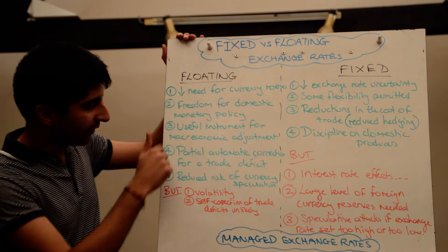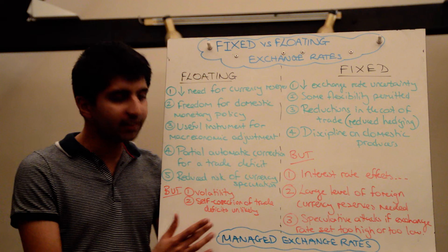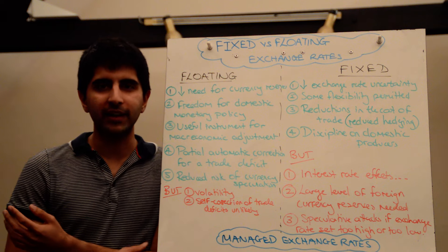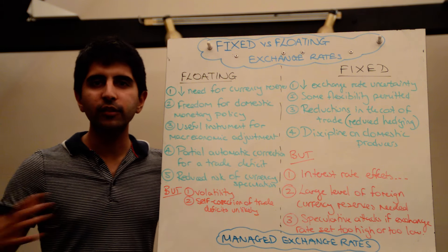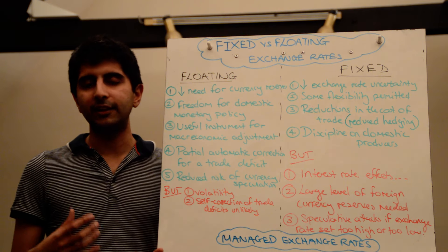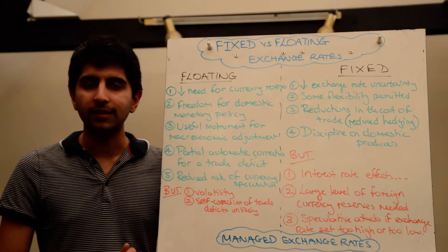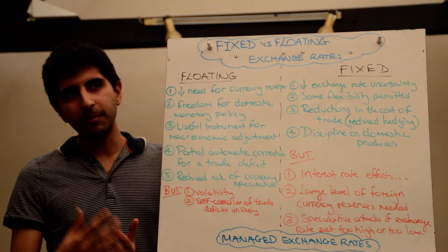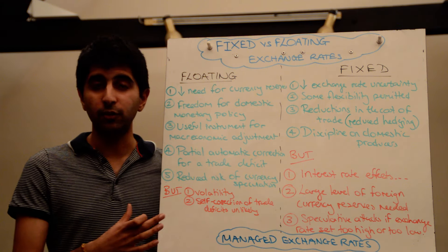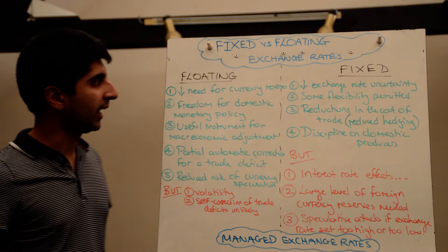Also, when we talk about the self-correction of a current account deficit, that's mainly theoretical — in reality it's unlikely to occur. Why? Because imports and exports are only two of the factors affecting demand and supply for a currency. There are loads of other far more dominant factors, like speculation. Speculative flows are way more likely to affect demand and supply and change the exchange rate value than a current account deficit is. So while import and export demand can have an impact, it's nowhere near as big as speculation, which can actually stop the automatic correction occurring. That limits the value of a floating exchange rate.